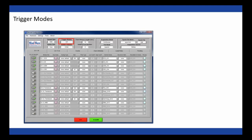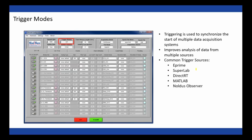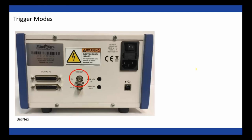Next we'll move on to triggering. Biolab can be integrated with external systems, and one of the ways we do this is through triggering. Triggering is used to synchronize the start times of multiple data acquisition systems, which improves your analysis experience when working with data from multiple sources. Common trigger sources include stimulus presentation packages such as E-Prime, SuperLab, or DirectRT. You can use MATLAB to write custom scripts that trigger and send events to Biolab. The Noldus Observer software for behavioral monitoring is also a supported trigger source for Mindware.